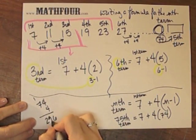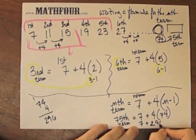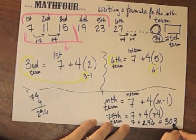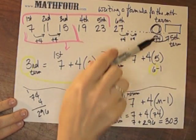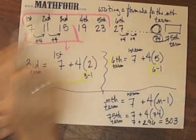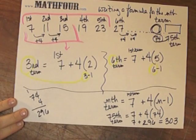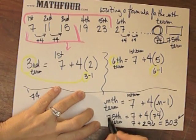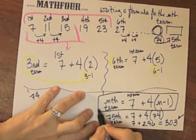So what's 4 times 74? 296. So 7 plus 296 is, oh wow, 303. So the 75th term is 303. Notice that means the 74th term is 299, right, because we subtract 4 to go here.